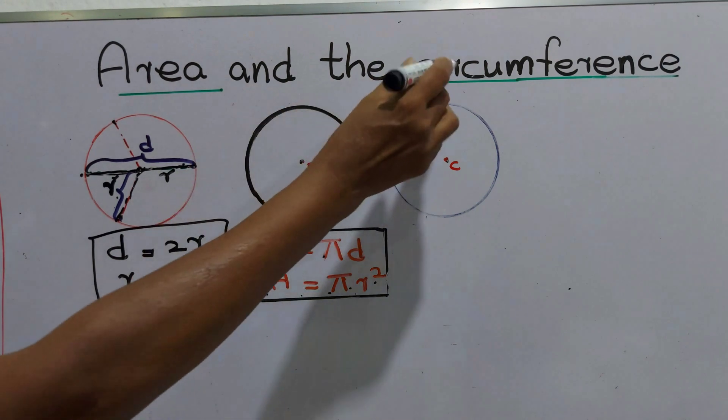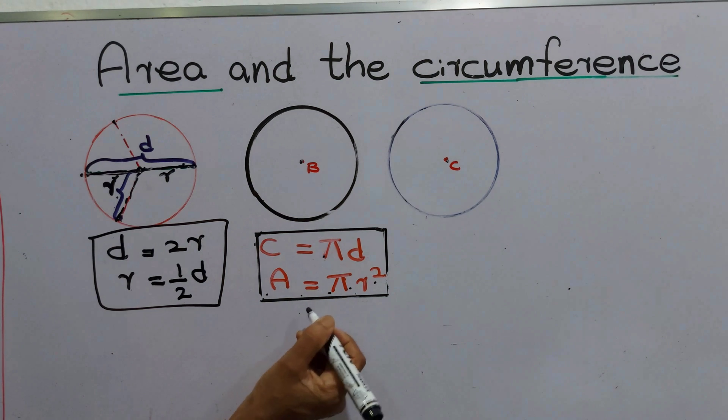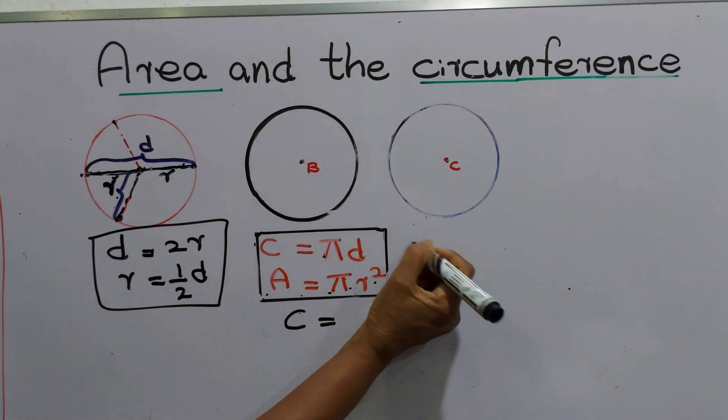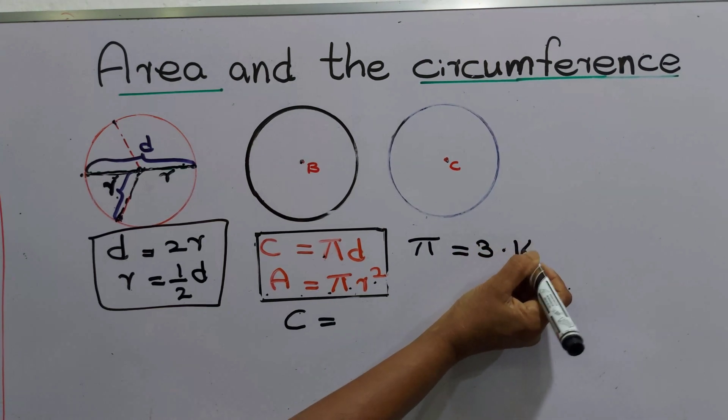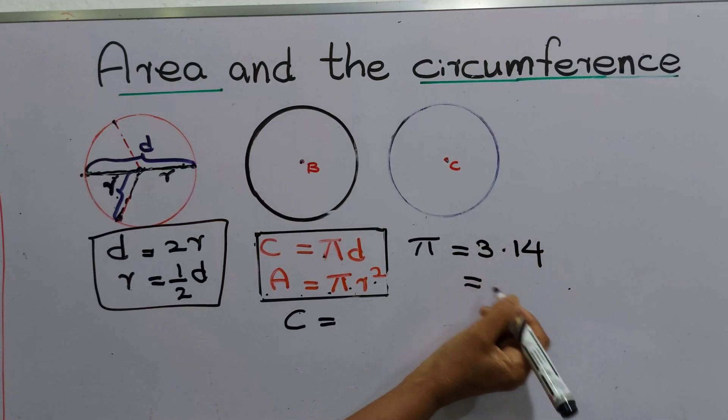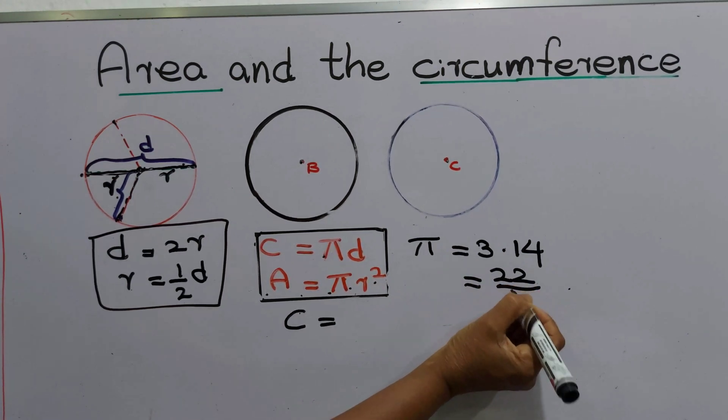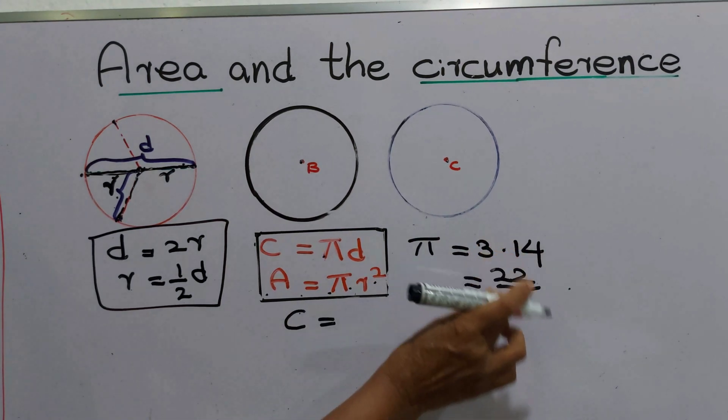Now we are going to learn about the circumference. This is the formula we are going to add: C equals πd. Let's introduce the value. π means 3.14, or we can write it as a fraction like this: 22 upon 7. That's a fraction we can use.